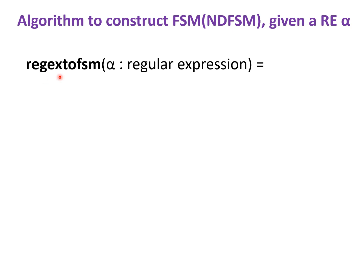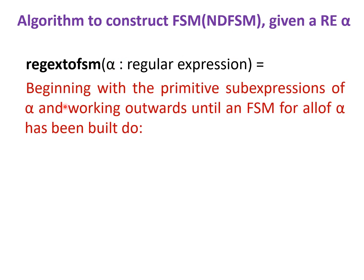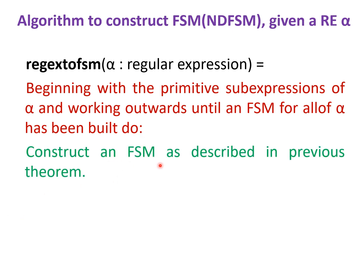This algorithm — regular expression to FSM — is used to construct an FSM, preferably a non-deterministic finite state machine, given a regular expression alpha. Beginning with the primitive sub-expressions of alpha and working outwards until an FSM for all of alpha has been built, we construct the FSM as described: handling epsilon, null, a symbol of an alphabet, union of two regular expressions, concatenation of two regular expressions, and Kleene star.